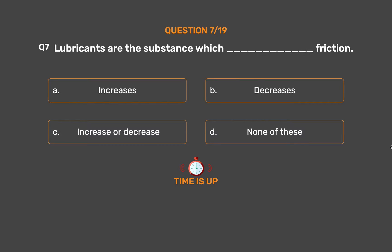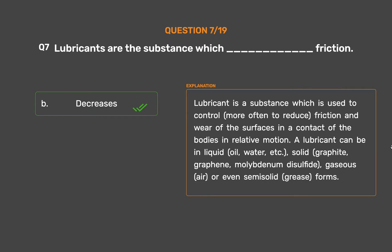The correct answer is Option B: Decreases. A lubricant is a substance used to control — more often to reduce — friction and wear of surfaces in contact of bodies in relative motion. A lubricant can be in liquid form (oil, water, etc.), solid form (graphite, graphene, molybdenum disulfide), gaseous form (air), or even semi-solid form (grease).